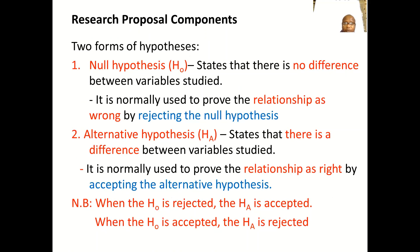There are two forms of hypothesis: the null hypothesis and the alternative hypothesis. The null hypothesis states there is no difference between the variables studied and is used to prove a relationship by being rejected. The alternative hypothesis states there is a difference between variables studied and is proven by being accepted. When the null hypothesis is rejected, the alternative hypothesis is accepted; when the null hypothesis is accepted, the alternative hypothesis is rejected.